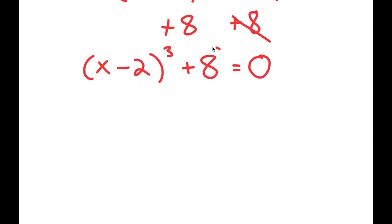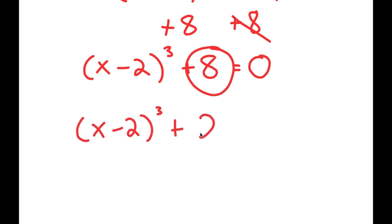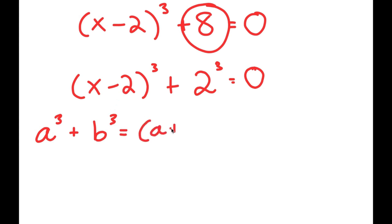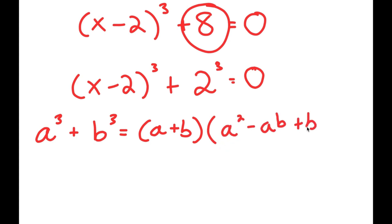From here, I can rewrite 8 as 2 to the power of 3. So I have x minus 2 to the power of 3 plus 2 to the power of 3 equals 0. The reason I did that is because if I have something in the form a to the power of 3 plus b to the power of 3, this is equal to a plus b times a squared minus ab plus b squared.